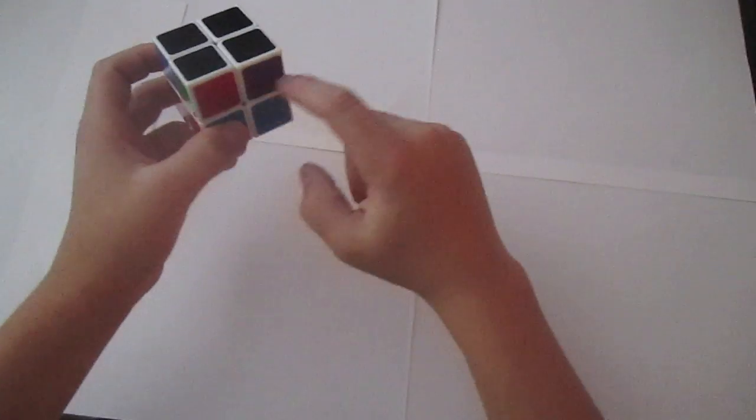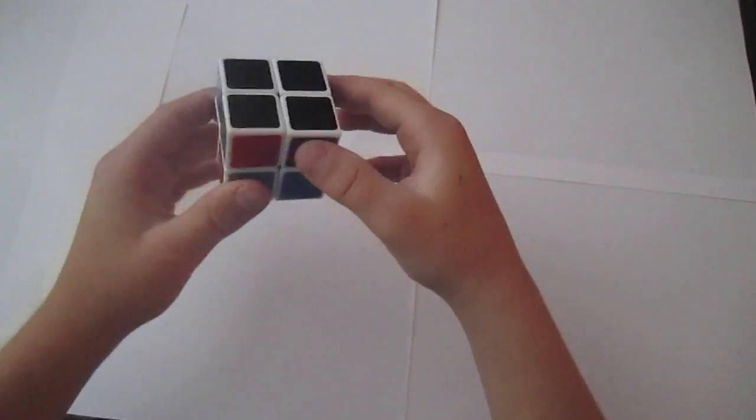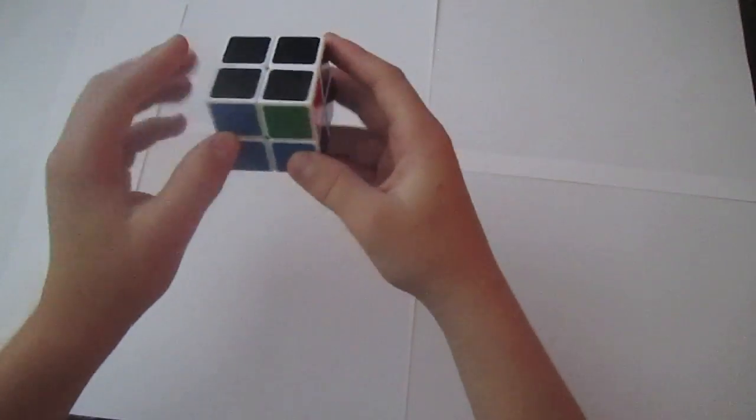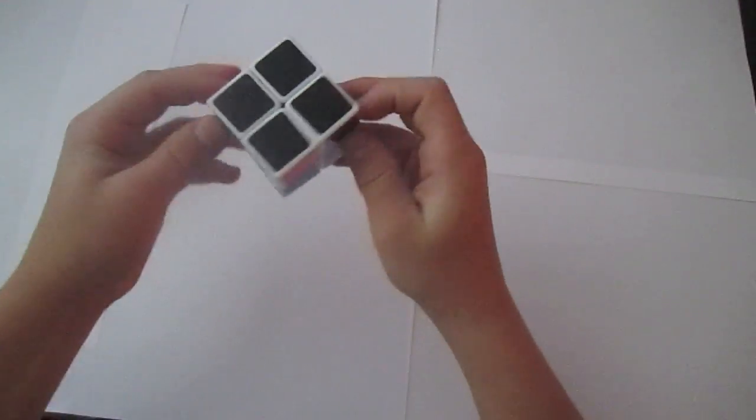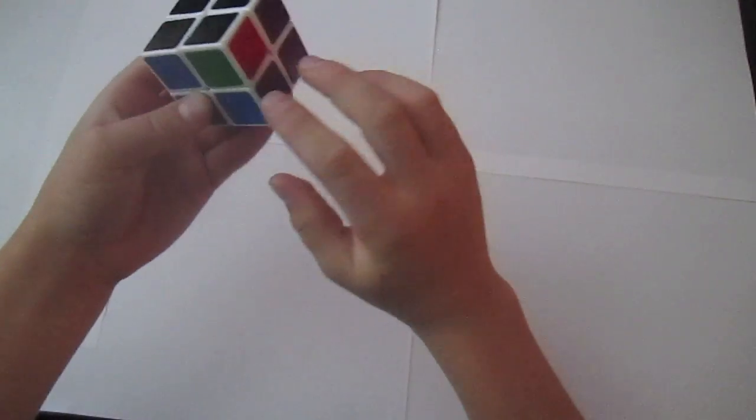The next step is to orient all these pieces. You're going to try to find if there's any like this. In this case right here, I have to switch this piece and this piece.